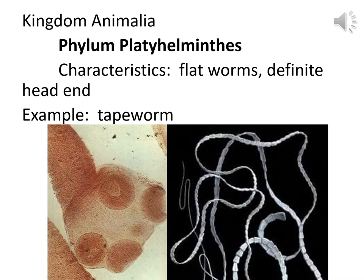Tapeworms are in Phylum Platyhelminthes — good thing it's not an oral exam. The characteristics are flatworms that have a definite head end. The 'platy' part means flat like a dinner plate, and 'helminth' refers to worms. If you look at the picture on the left, you can see the scolex with hooks and suckers that attach the tapeworm to your intestines. Tapeworms have lots of segments — probably thousands — and each segment has about 50,000 microscopic eggs.